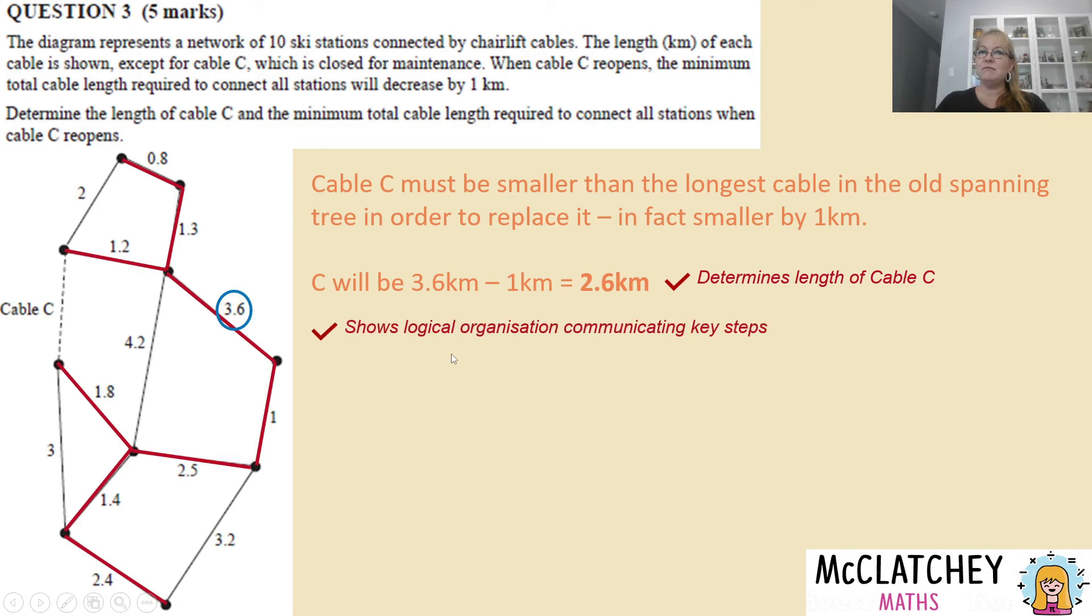And there was actually a fifth mark there for logical organization communicating key steps. Now you might be wondering what does that involve? So it's things like this. Some of your justification and explanation. If you're thinking in your head about things and you want to explain that. Showing your calculations. Using your units of measurement. Drawing your spanning tree on here. Even stating what algorithm you used. All these little steps that you can do. Demonstrate the flow of the question and that provides that logical organization mark for you.